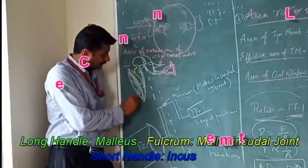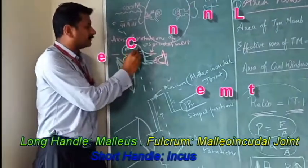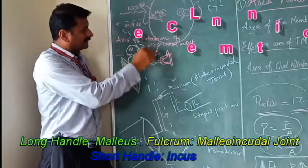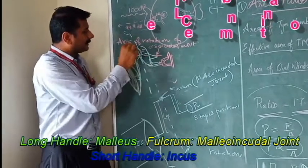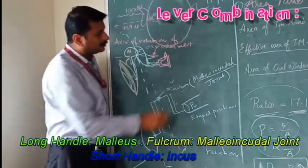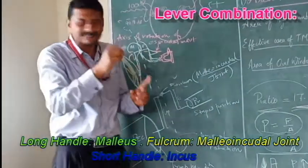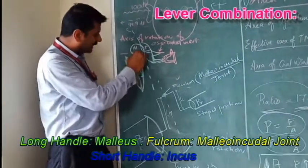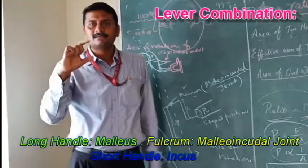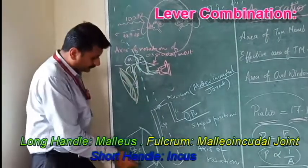The tympanic membrane is coupled to the first bone, the malleus; second, the incus; third, the stapes. The malleus, incus, and stapes are coupled to each other. The fulcrum — the point of movement — is the malleus-incudal joint, the joint between the malleus and the incus. The ratio is based on the length of the manubrium of the malleus and the long process of the incus.